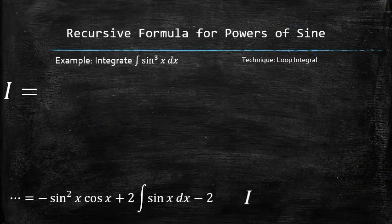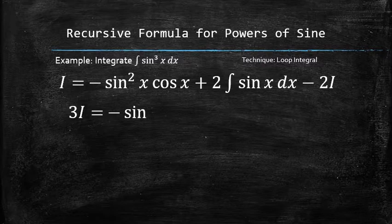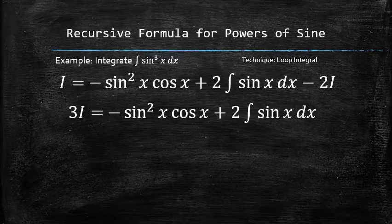After removing all the intermediate results, we now have the following equation in terms of i. To collect all i's on one side, we add 2i to both sides.